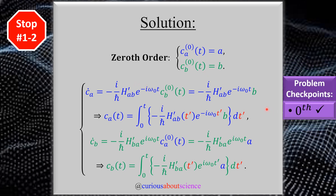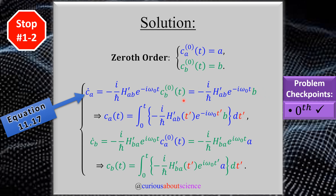We have to substitute the zeroth order back into equation 11.17. Given that the equation is C-dot for A equals negative i over h-bar times the matrix element AB of the perturbation times e to the minus i omega-naught T, we plug in the zeroth order part, which is just B. These equations are coupled: for CA I need state B, and for CB I need state A. For a two-level system, we solve this as a function of time by simply integrating — since C-dot is dCA/dT, we integrate with respect to time over T-prime up to T.